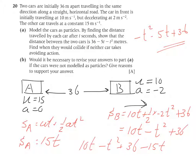Find when they would collide if neither car takes any action. That will happen when their displacement is equal. So when 15T is equal to 10T minus T squared plus 36. When their displacement is equal, then they will collide.